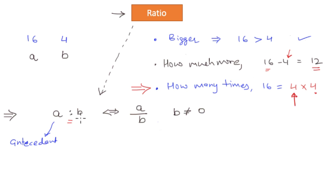And the number b is called subsequent. So the ratio is always of two numbers and you can say that they are antecedent is to subsequent. Now let us go through some examples to get a deeper understanding on the concept of ratio.